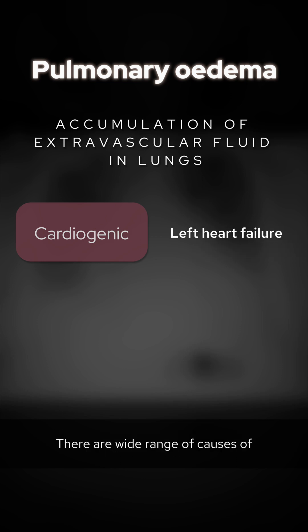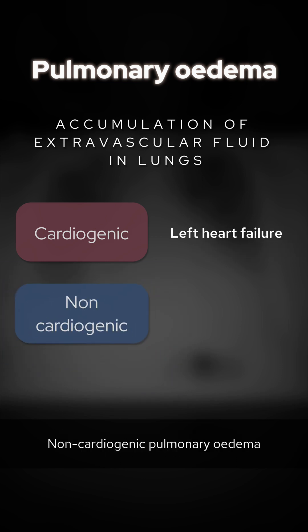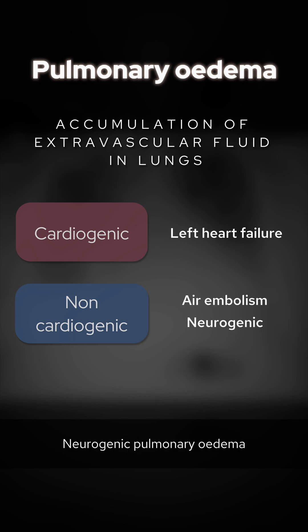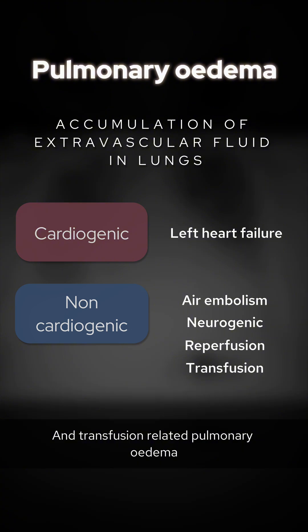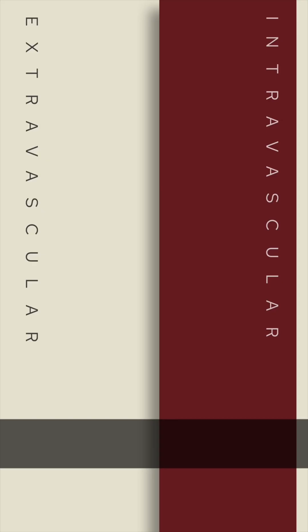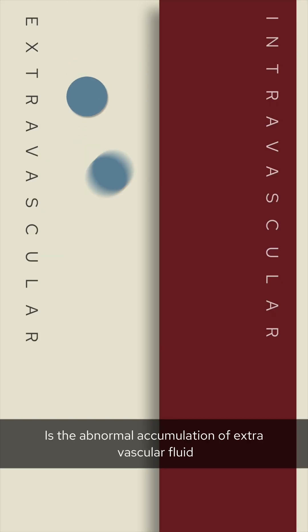There are a wide range of causes of non-cardiogenic pulmonary edema, including air embolism, neurogenic pulmonary edema, reperfusion, and transfusion-related pulmonary edema. The common factor in all of these is the abnormal accumulation of extravascular fluid.